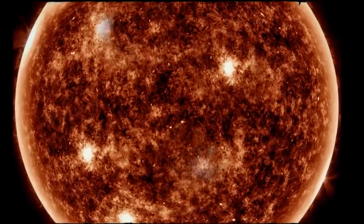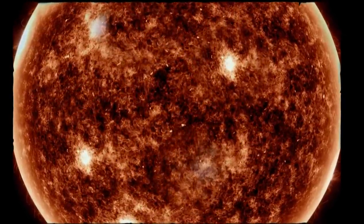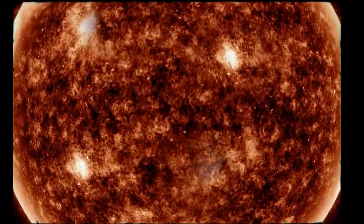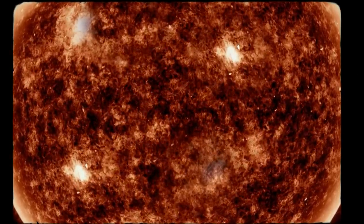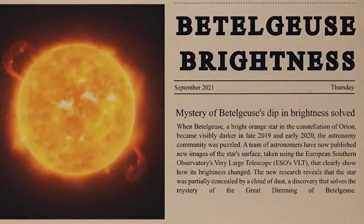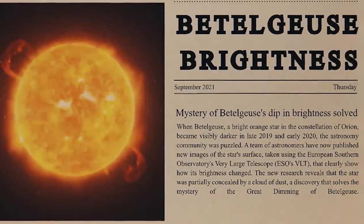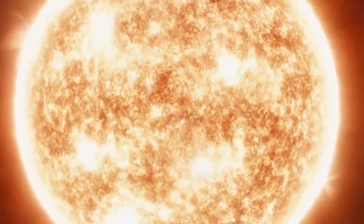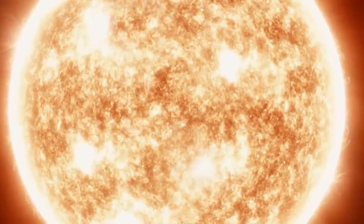By mid-February 2020, Betelgeuse had lost around three times as much brightness from magnitude 0.5 to magnitude 1.7, after beginning to decline sharply in October 2019. By February 17th of 2020, Betelgeuse's brightness had been stable for almost 10 days, and the star had started to brighten once more.